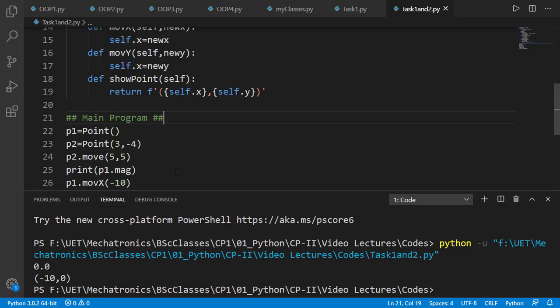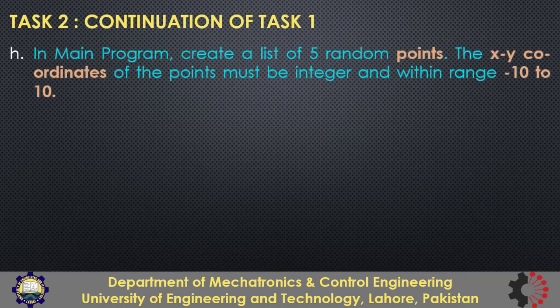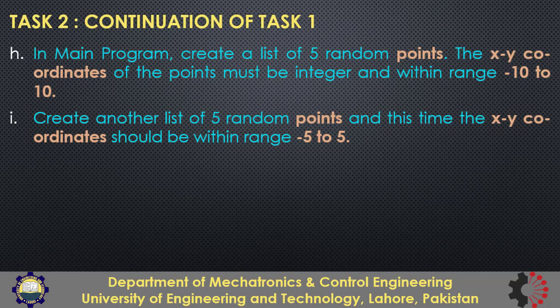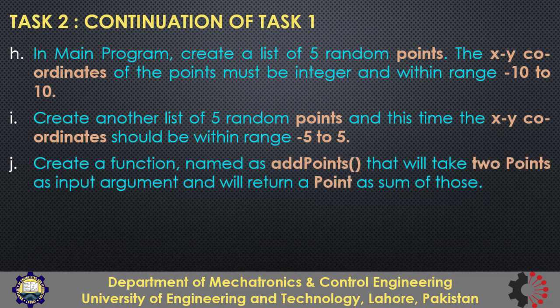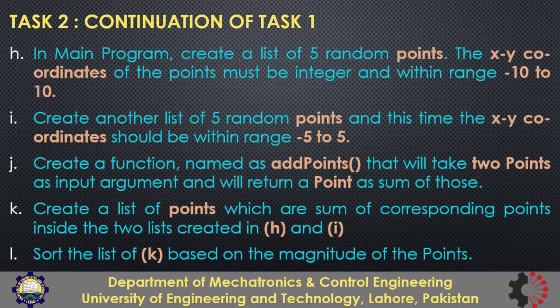Now let's move to the second task, which is basically the continuation of task 1. In this task you don't need to add anything to the class, but it's related to the use of the class in the main program. First, create a list of 5 point objects with random values of x and y components, where the random values should be integers from -10 to 10. Then create another list of 5 random points, but this time the random values of x and y should be between -5 and 5. Then create a function named addPoints that will take two points as input arguments and return a point object that is the sum of the two. Then create a list of points which are the sums of the corresponding points from the two lists using the addPoints function. Finally, sort the third list of points based on the magnitude of the points and print the list.